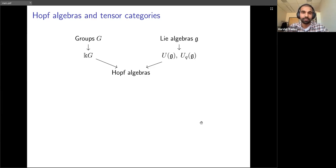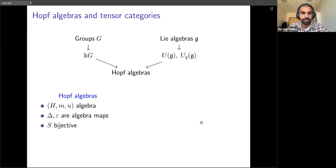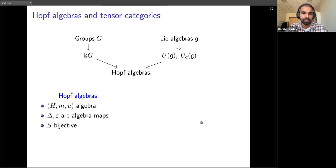In particular, if we take a group and form its group algebra, that is an example of a Hopf algebra. If you start with a Lie algebra, then its universal enveloping algebra or the quantized version are both Hopf algebras. In more detail, a Hopf algebra consists of: a vector space with a multiplication and unit maps so that we get a k-algebra; two maps delta and epsilon, where delta goes from H to H⊗H — the co-multiplication — and epsilon is the co-unit.